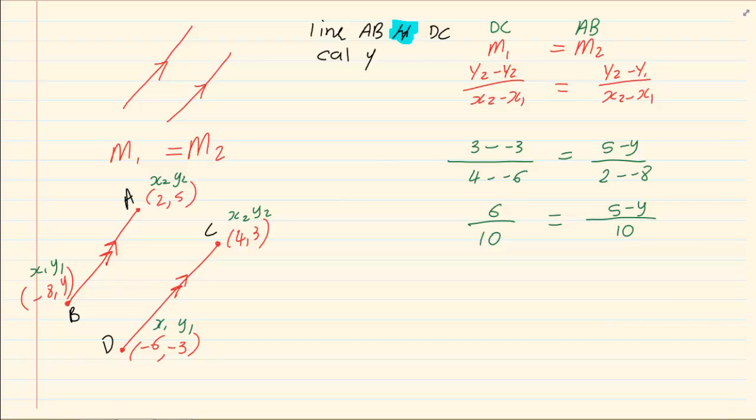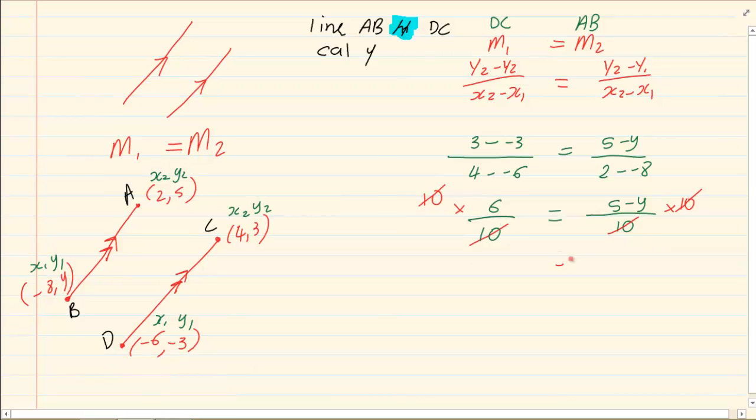Now, how do we solve for y? After you've substituted, it's simply solved for unknowns. So, I'm going to times by 10. In this case, the other side is also 10. Then, we have 6 is equal to 5 minus y. So, y is equal to 5 minus 6, making y equal to minus 1.